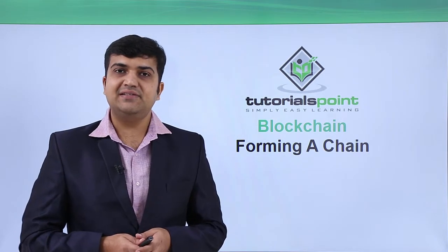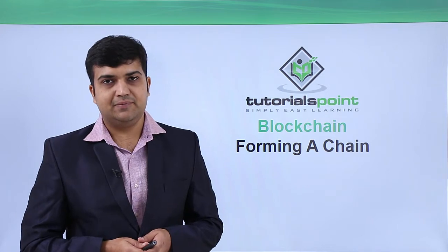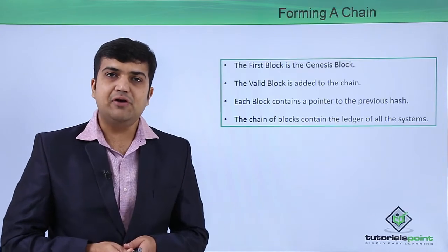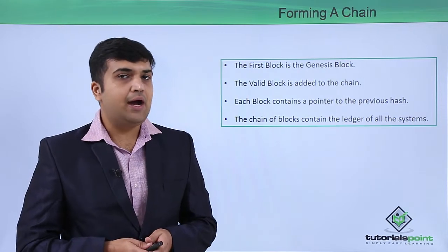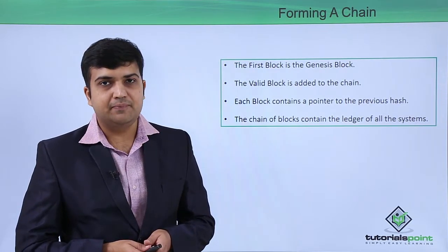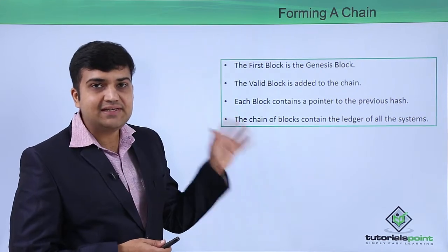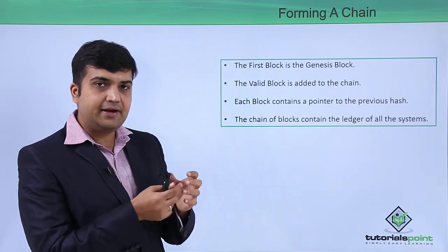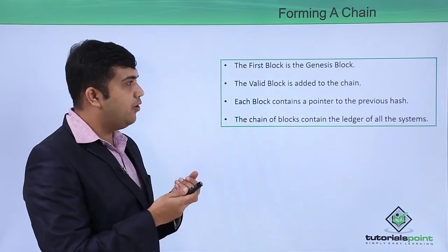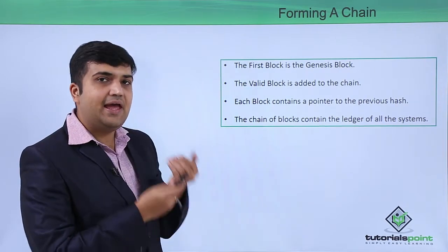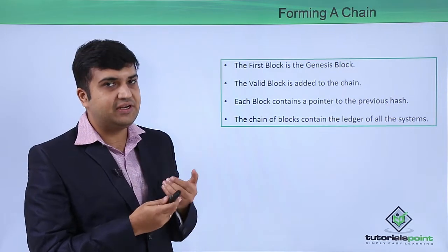Let's see how the linkages and chain are formed in blockchain. From the explanations of the previous video, it would be quite intuitive how the linkages are formed. The first block, that is the genesis block, is first added into the blockchain. After that, each of the blocks are first validated, and once the blocks are validated, the valid blocks are added to the chain.